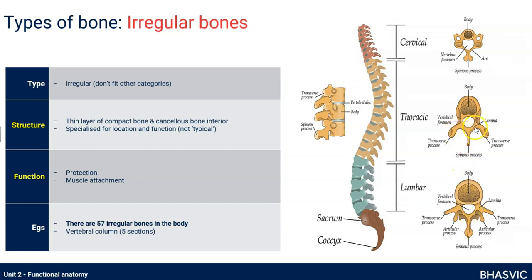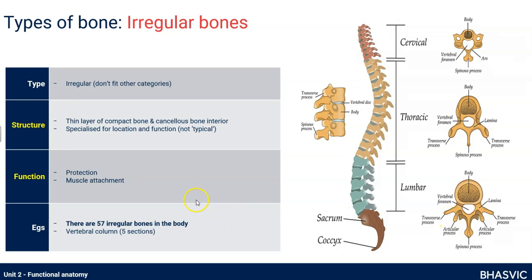The spinous processes — the sticky-out bits at the back of the vertebrae that you can feel going up your back — are designed specifically for attaching muscles and ligaments to. So going back to what you need to know: irregular bones are specifically designed for their job and location. Vertebrae, for example, are structured with a hole to protect the spinal cord and with processes for muscle and ligament attachment.